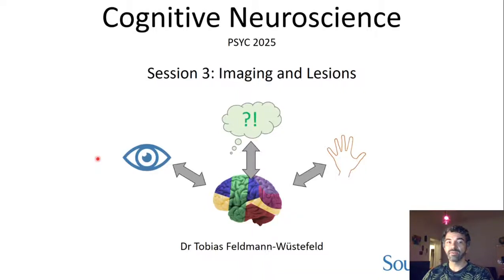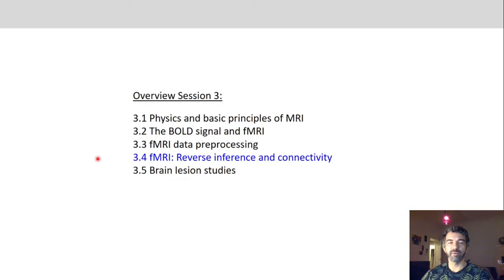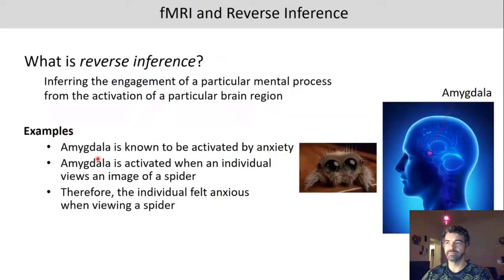This is the fourth part of today's session on imaging and lesions. In this part we will look at reverse inference and also how fMRI can be used to measure connectivity in the brain.